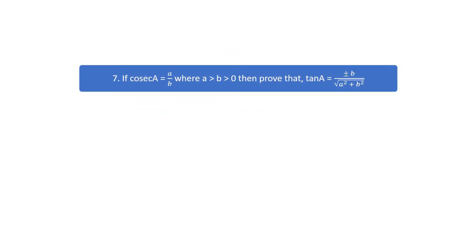Question number 7. If cos α equals a by b, where a greater than b greater than 0, then prove that tan α equals plus minus b by root over a square plus b square.